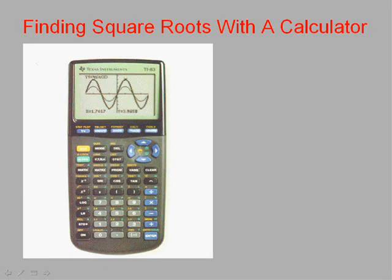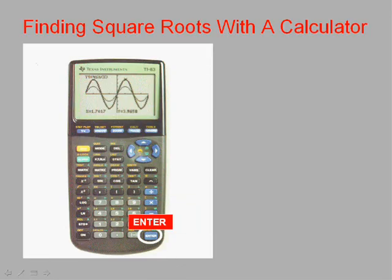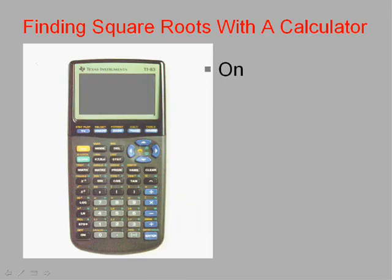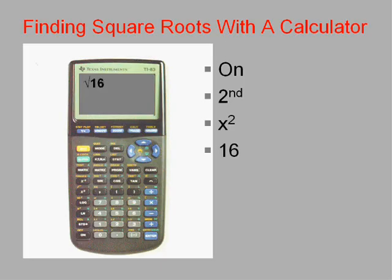Now, I think we already know how to find square roots with your calculator. We're going to use the x-squared button in combination with the second button and the enter button. Basically we'd hit second, x-squared, and that would give us the little square root symbol. Then you'd type the number you want to take the square root of — for instance, if I type 16, I hit enter, and it gives me the square root: 4.